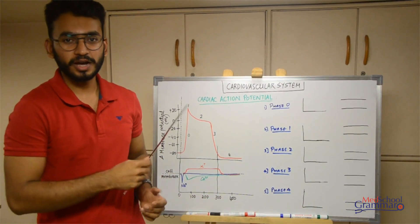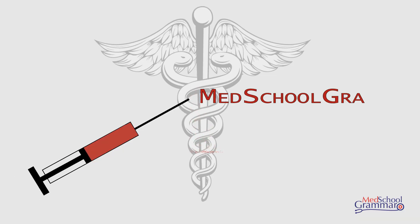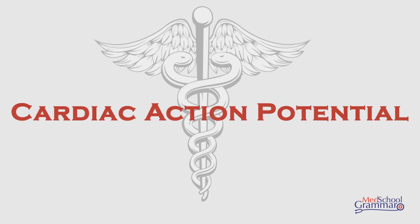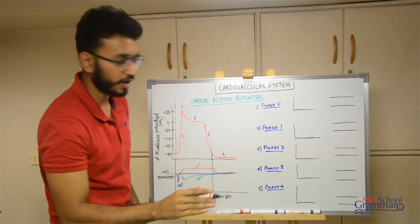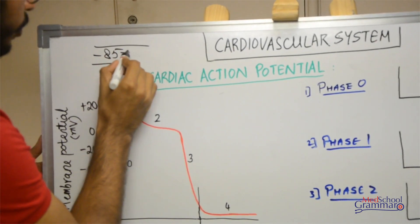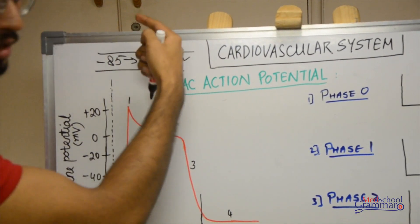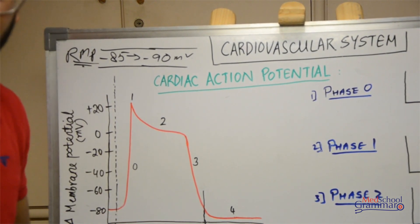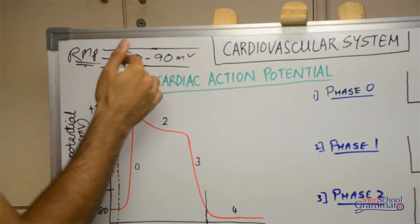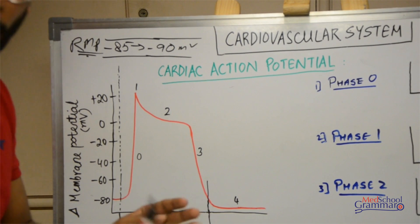Today we will continue with the cardiovascular system and today's topic is cardiac action potential. The resting membrane potential of the cardiac muscle fiber is about minus 85 to minus 90 millivolts. The insides are negative compared to the outside at rest. Action potentials are transient changes in these membrane potentials. Cardiac action potentials differ from the normal action potential seen in large myelinated nerve fibers.